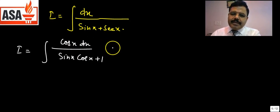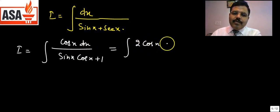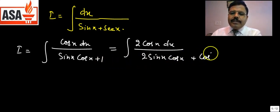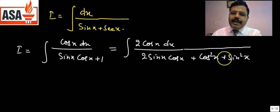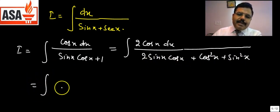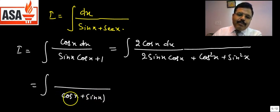Now multiply numerator and denominator by 2. Why? Because 2 sin x cos x = sin 2x, and we can write 1 = cos²x + sin²x. So the denominator becomes 2 sin x cos x + cos²x + sin²x = (sin x + cos x)². The numerator becomes 2 cos x dx. This transforms the integral into ∫2 cos x dx / (sin x + cos x)².